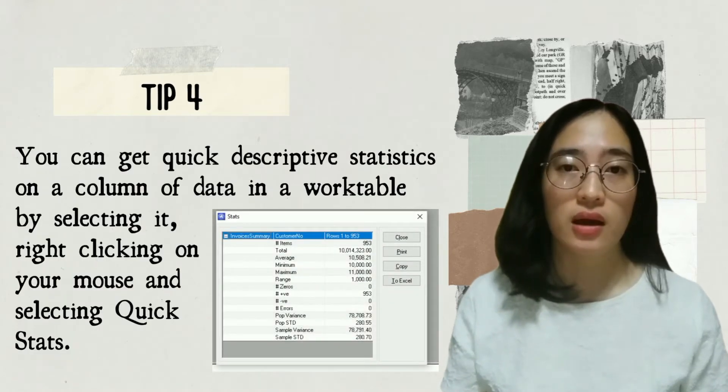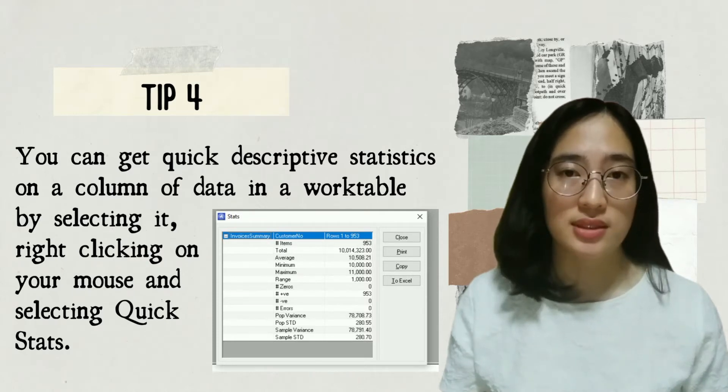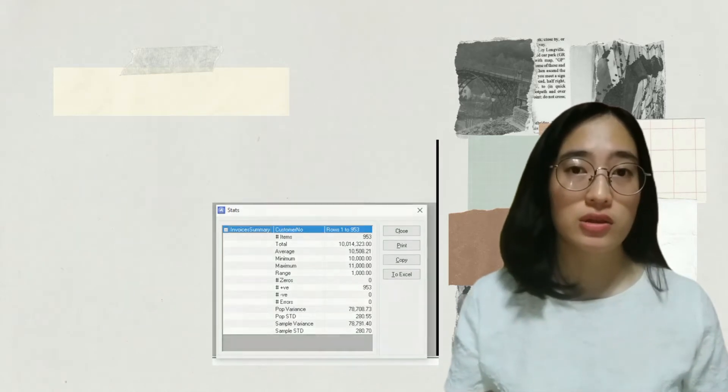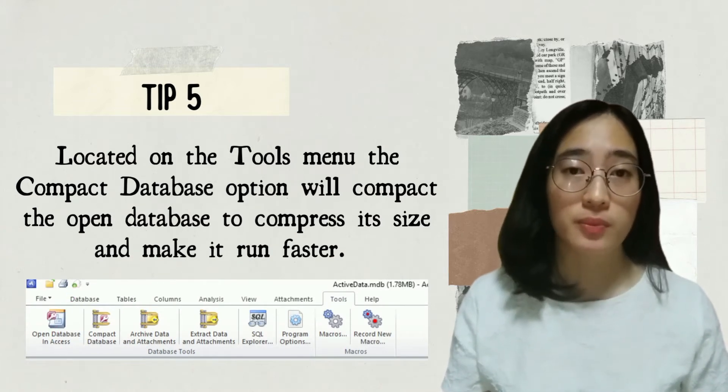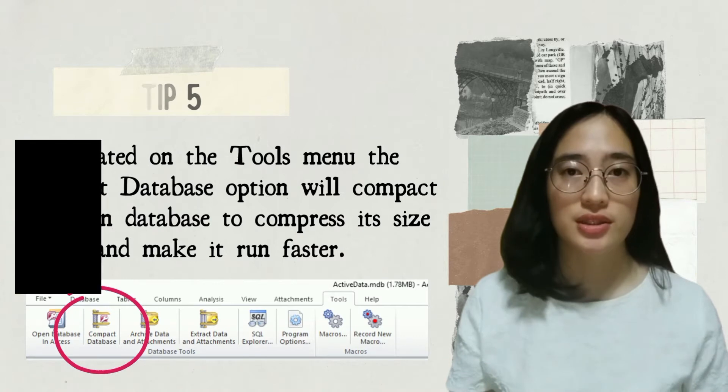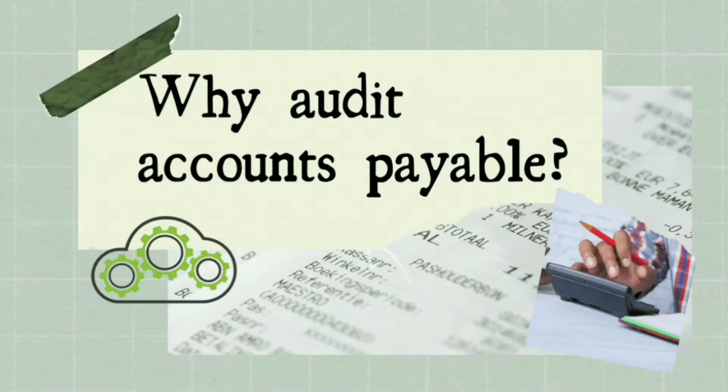You can get quick descriptive statistics on a column of data by selecting it, right-clicking, and selecting Quick Stats. Also located on the Tools menu, the Compact Database option will compact the open database to compress its size and make it faster. Now that we have a brief background on Active Data, we have a basic idea of how to run the software. But first, let us discuss why we should audit accounts payable.